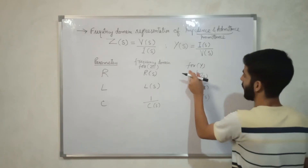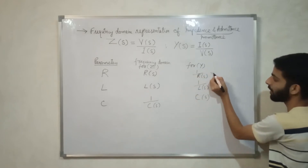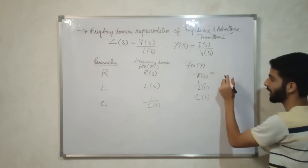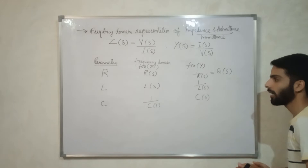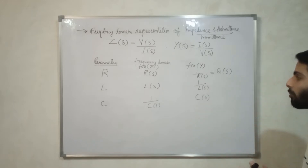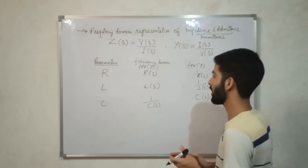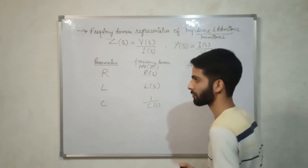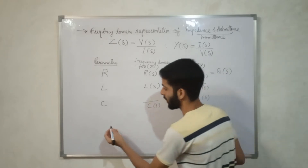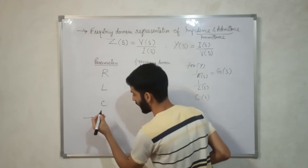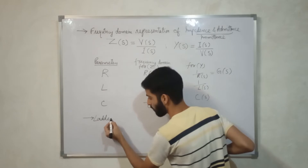Here, 1 upon R — what is 1 upon R? 1 upon R is conductance, which becomes G(s). In the next section, we shall be studying about ladder networks — what are ladder networks?